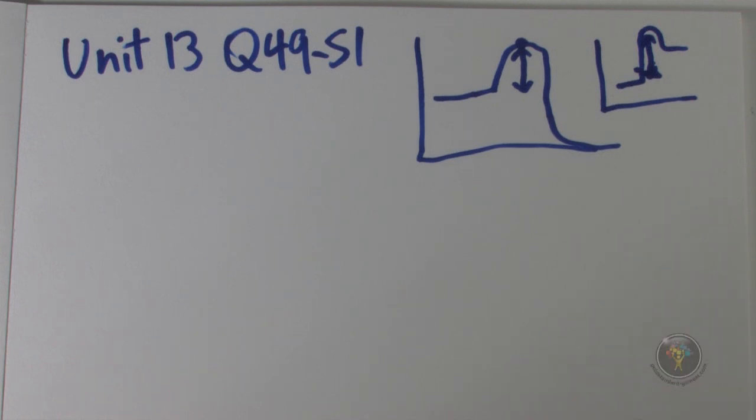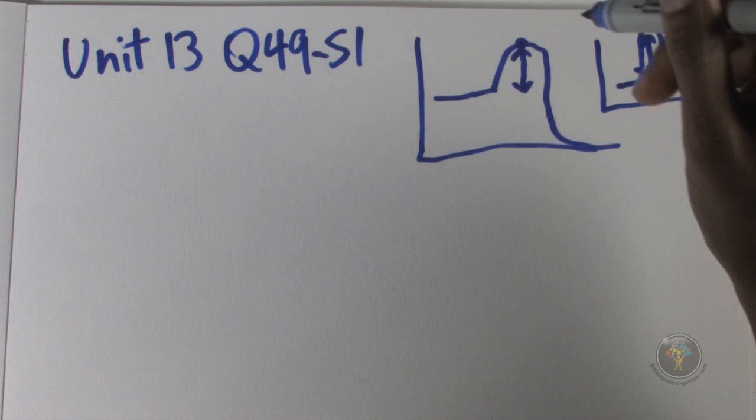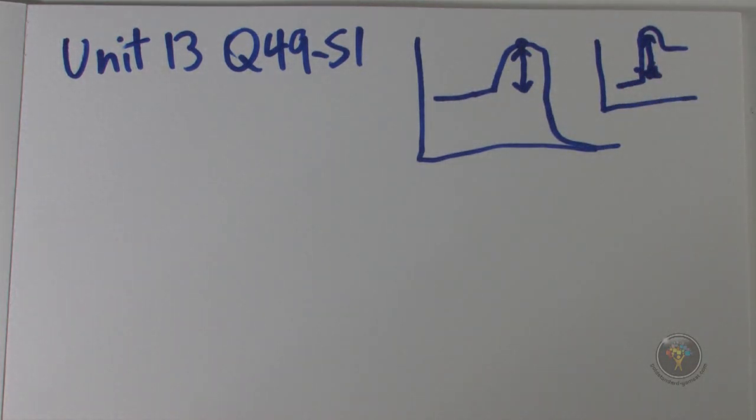Question 49, the answer is A. Of course it's going from E1 to E2, and that would represent this part of the curve, and that's the activation energy.